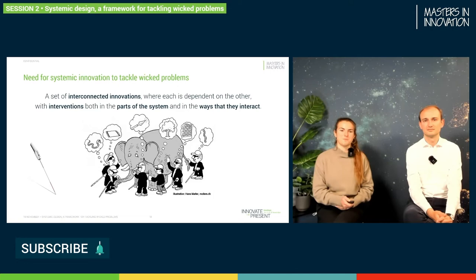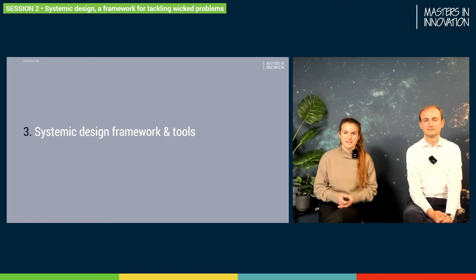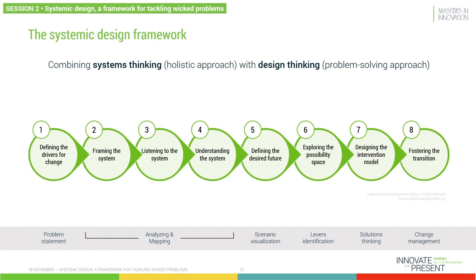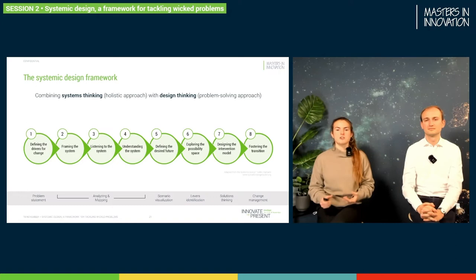To approach these systemic innovations, we have some frameworks. As Benoit already told in the beginning, it's the marriage between systems thinking and design thinking. Systems thinking is a more holistic approach — it's about understanding the system and looking at the whole. Design thinking is problem solving. So what we're going to do is: first, define the problem — what are we going to change? Then we're going to understand the problem, map all the stakeholders, map all the relationships between them — are they reinforcing each other, or are there things that are weakening each other?